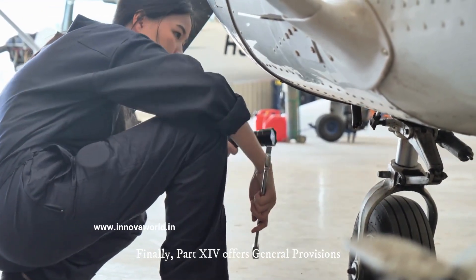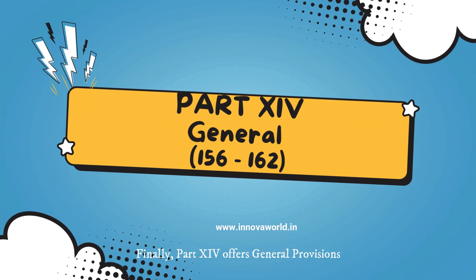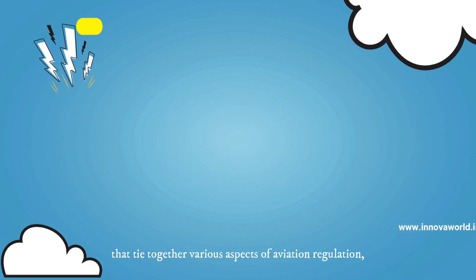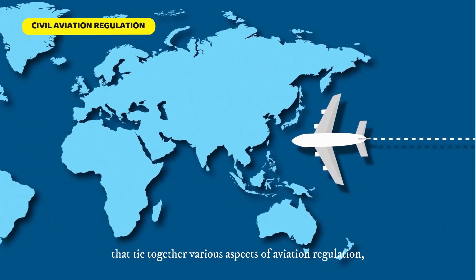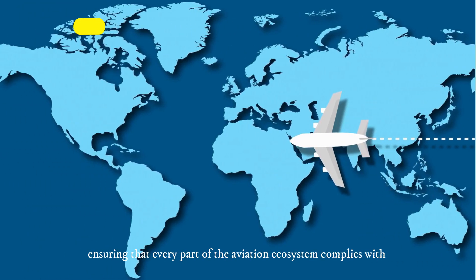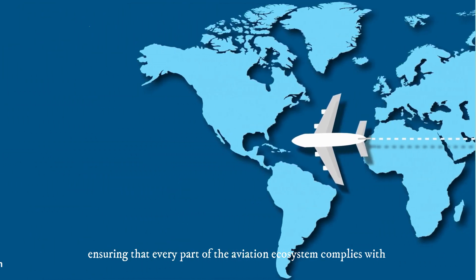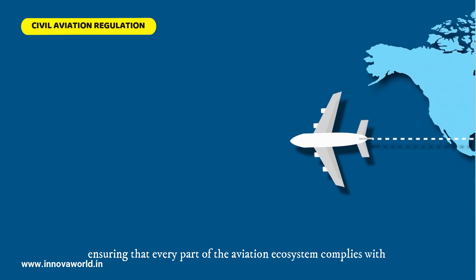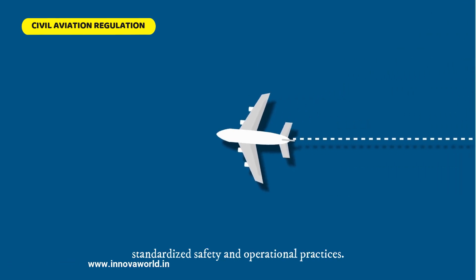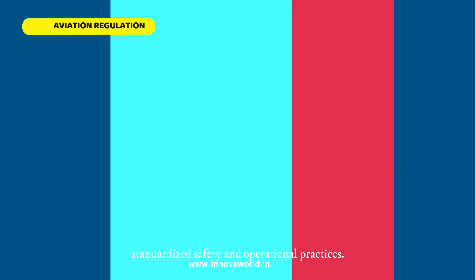Part 14 offers general provisions that tie together various aspects of aviation regulation, ensuring that every part of the aviation ecosystem complies with standardized safety and operational practices.